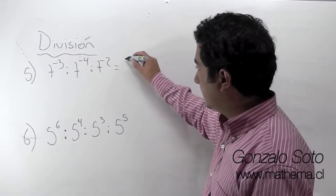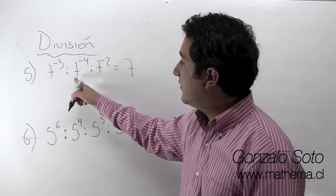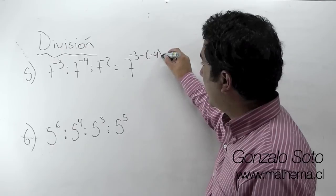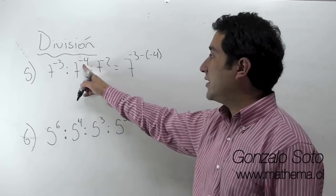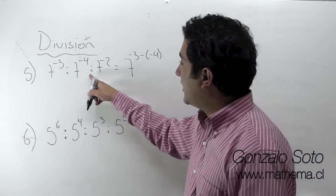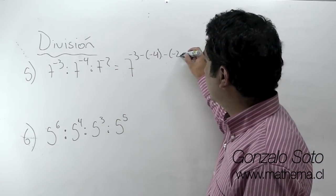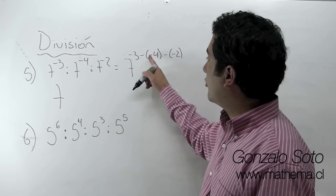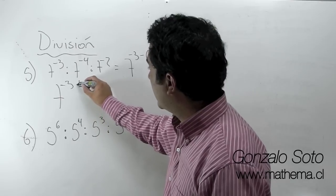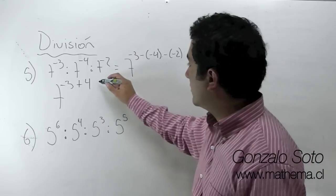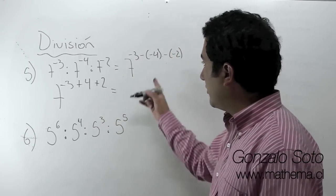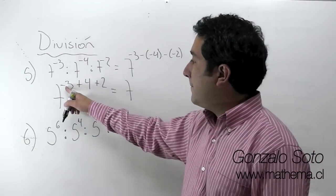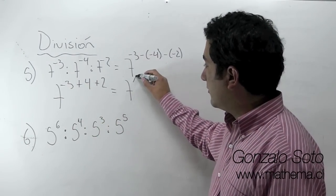En el caso 5 tenemos lo siguiente: la base es 7. En la división, vamos a restar, pero estamos restando un negativo, porque este ya está con signo negativo. Cuando tenemos dos signos negativos, los convertimos en un positivo: menos y menos da más. Ahora que ya tenemos transformados esos signos, vamos a hacer la suma: menos 3 más 4 es 1 positivo, más 2.